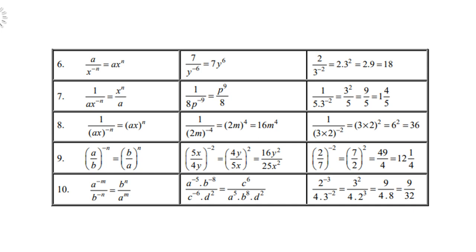For example, a to the power negative 5 times b to the power negative 8 over c to the power negative 6 times d to the power 2: both a and b must go down, c goes up, but d stays put. Also, 2 to the power negative 3 over 4 times 3 to the power negative 2: 2 to the power negative 3 goes down, 3 to the power negative 2 goes up, but the 4 stays in the denominator.